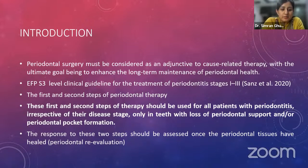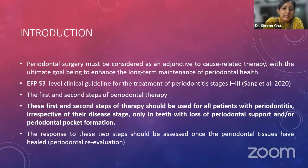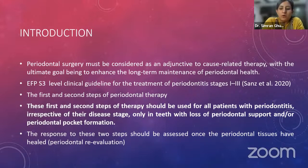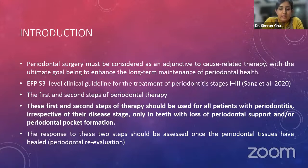The first and second steps of therapy should be used for all patients with periodontitis irrespective of disease stage, only in teeth with loss of periodontal support and/or periodontal pocket formation. The response to these two steps should be assessed once the periodontal tissues have healed, that is, at periodontal re-evaluation, which usually occurs 6 to 12 weeks after completion of the second step. Only when the endpoints — no bleeding points, no pockets greater than 4 mm with bleeding, or no pockets greater than 6 mm — have not been achieved should the third step be considered.